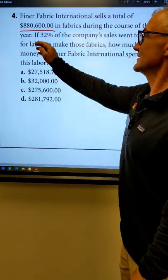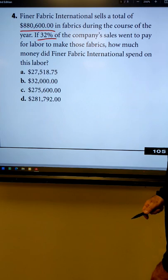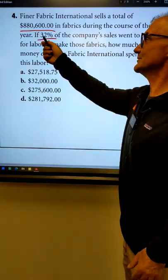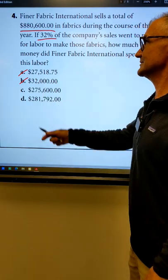This company made about a million bucks, 32% went for labor. How much did they spend on labor? Well, if it would round up to a million, a quarter, these don't make sense because it has to be close to a quarter million dollars, so it has to be one of these.